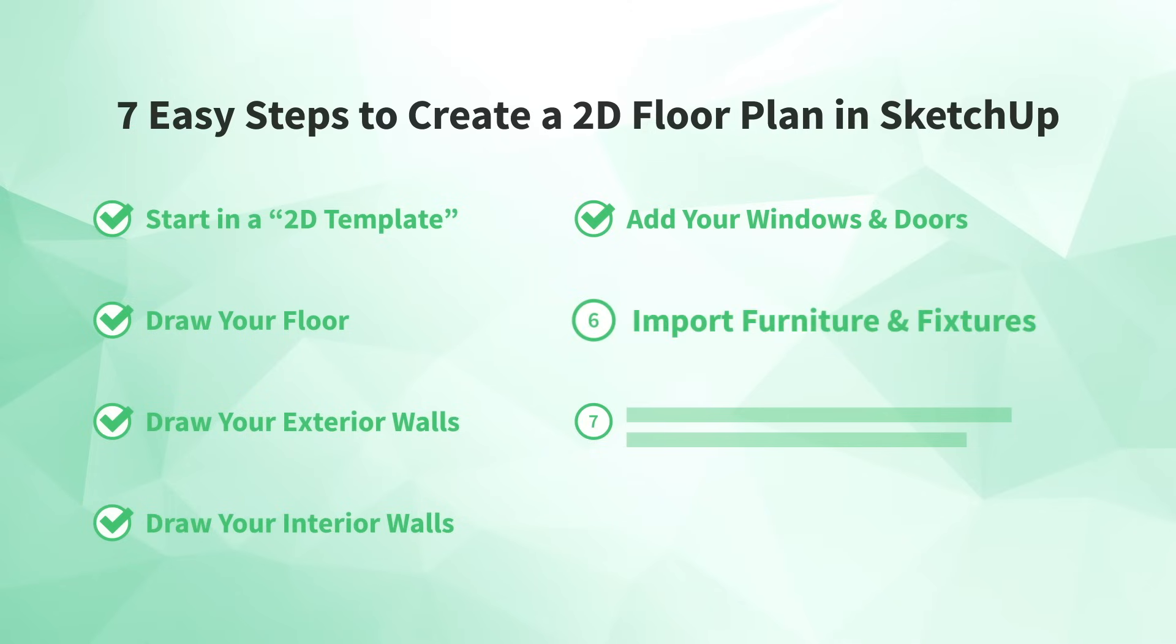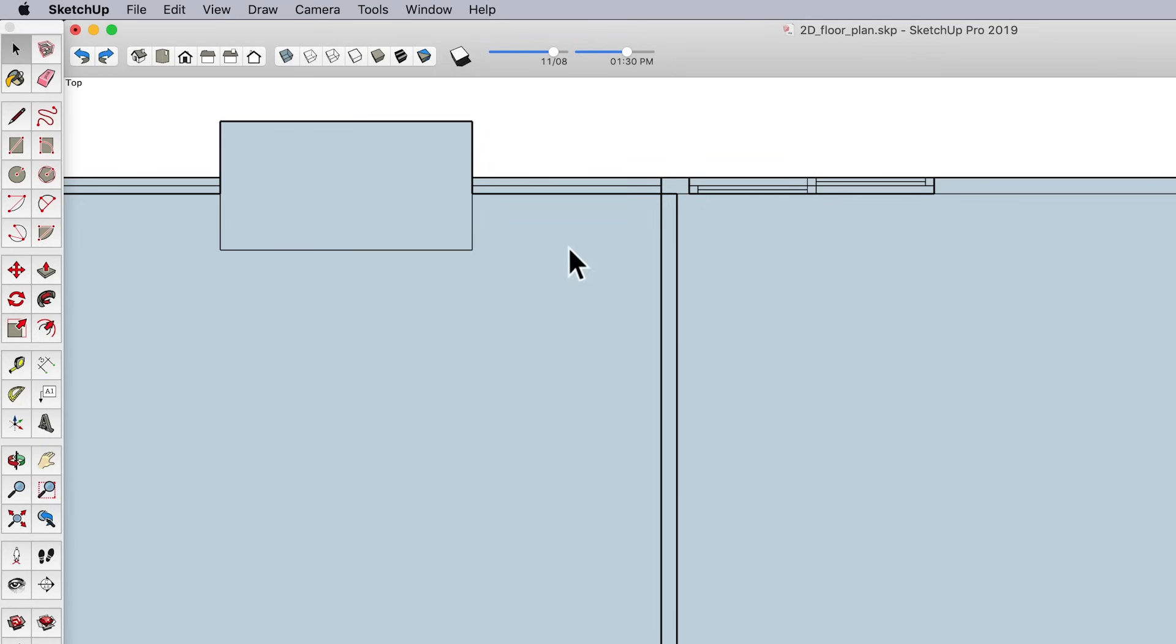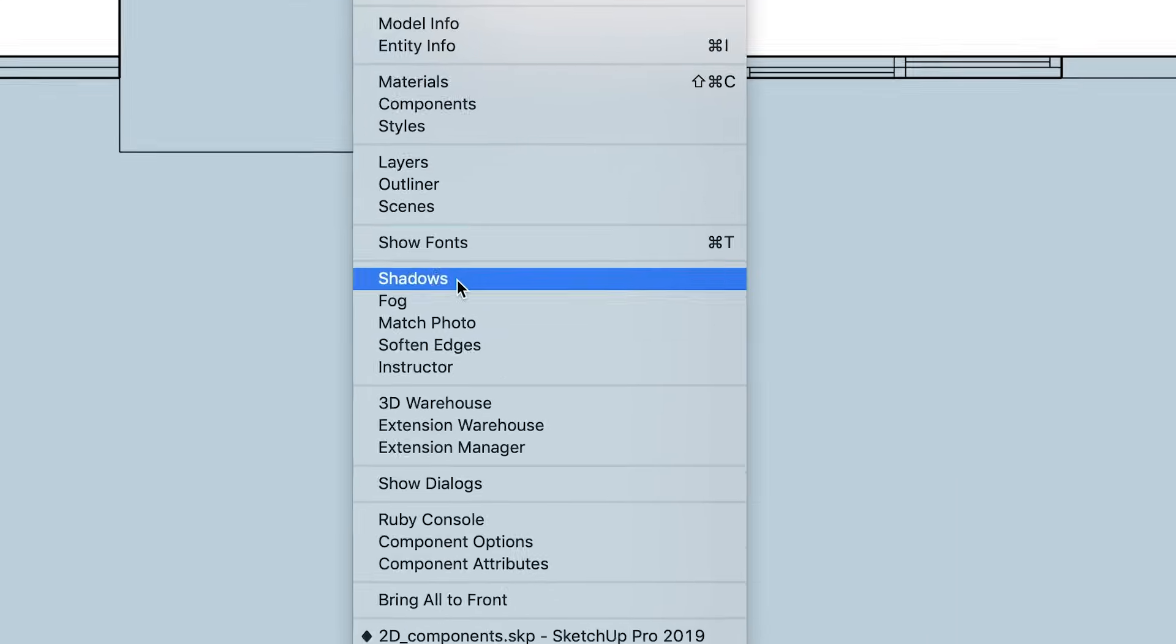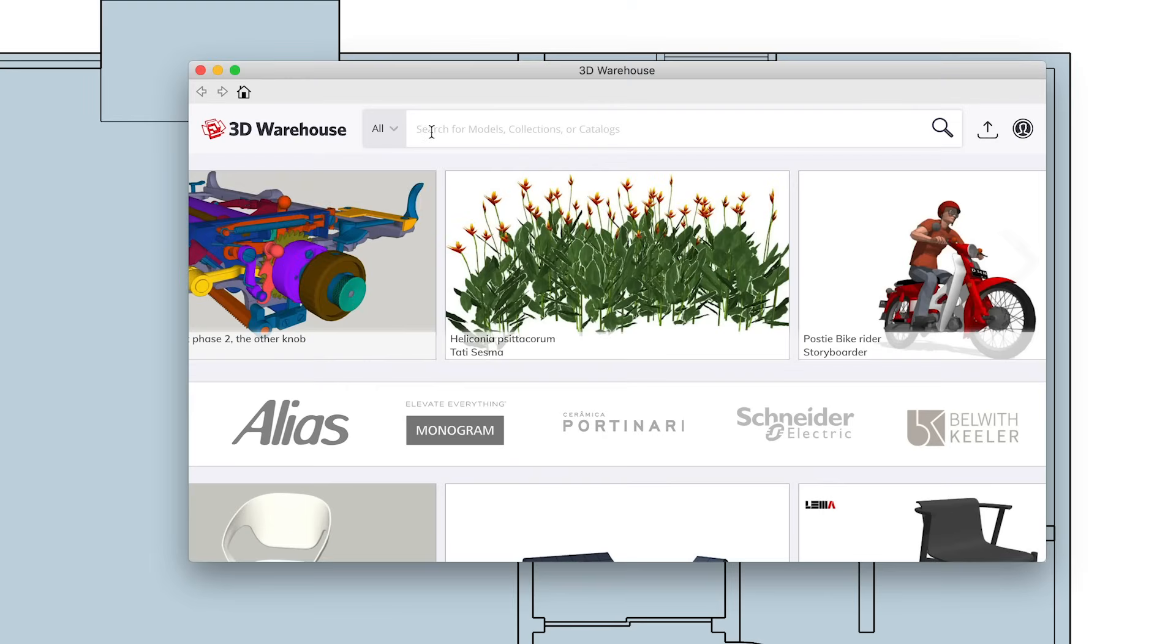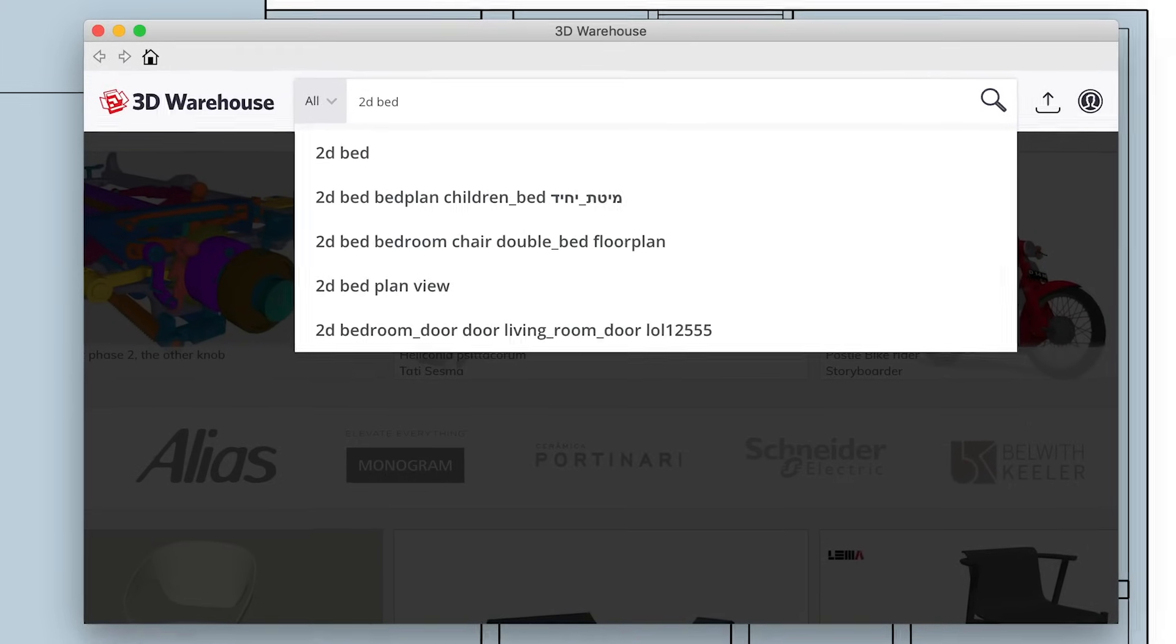Okay, once you've created all your windows and doors, it's time to add your furniture and fixtures. But you don't have to draw everything by hand. There's a faster way to add 2D symbols that we're ready to cover in our next step. Number six, import furniture and fixtures. It's true that you can draw all of your own 2D components for the things you need to show in your floor plan. But a great thing about components is that once they've been drawn by someone, they can easily be shared and reused again and again. If you're looking for 2D components that have been shared by others, a good place to start is SketchUp's 3D Warehouse. To access the 3D Warehouse in SketchUp, go to your top menu and select Window. Then select the option for 3D Warehouse. In the 3D Warehouse search box, type 2D and the name of the object you're looking for and press Enter.